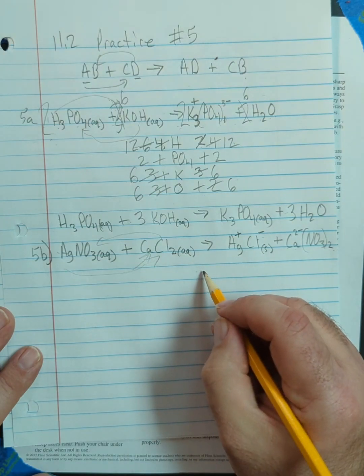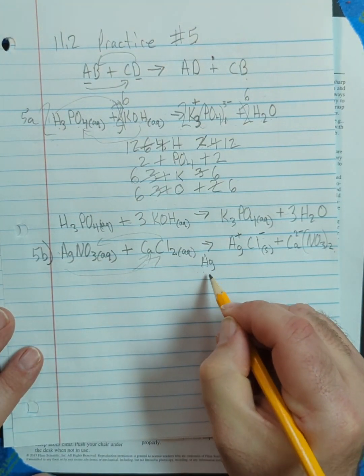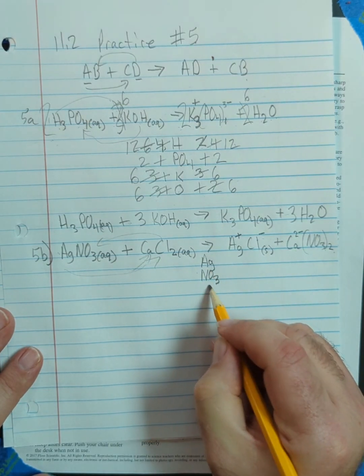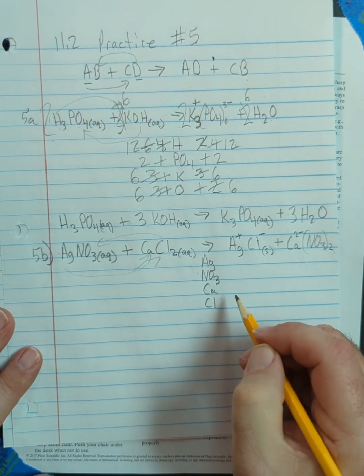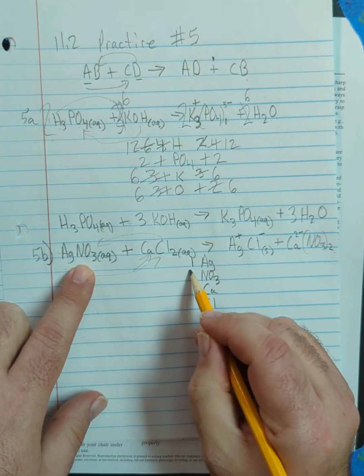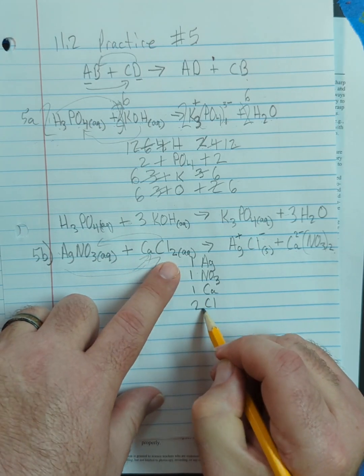Now we need to balance it. So we're going to have Ag, nitrate is the same on both sides, so we leave that together, calcium and chlorine. I have one silver, one nitrate, one calcium, two chlorines.